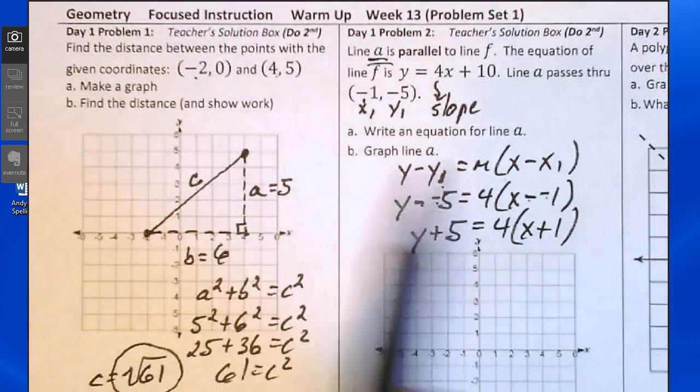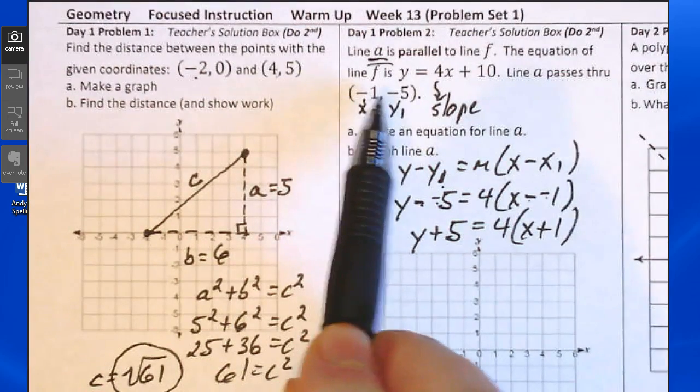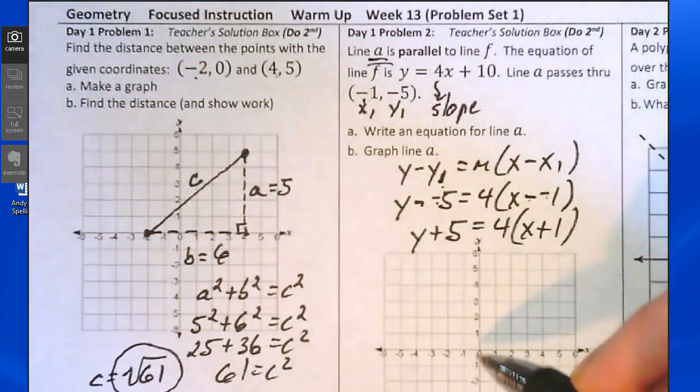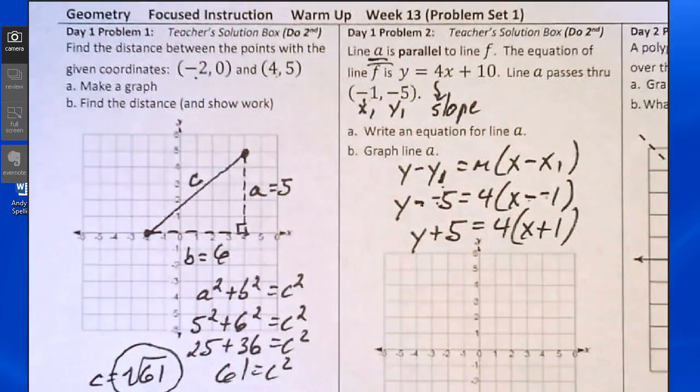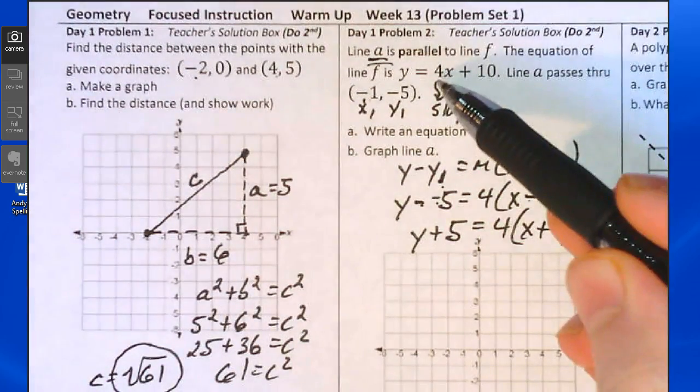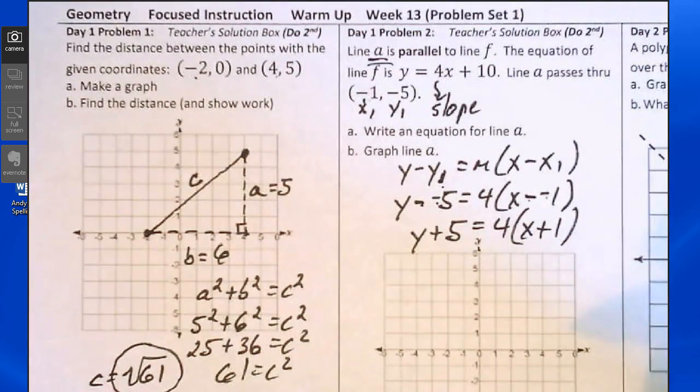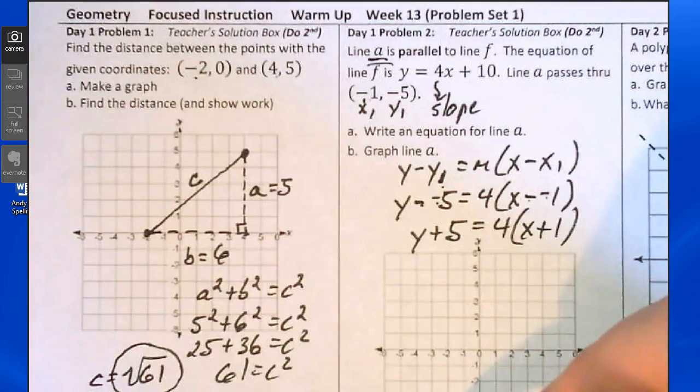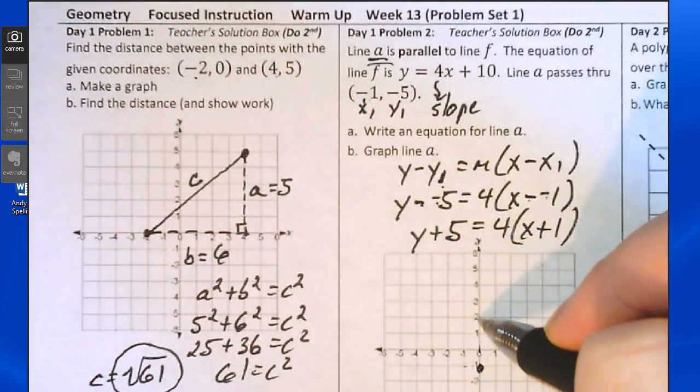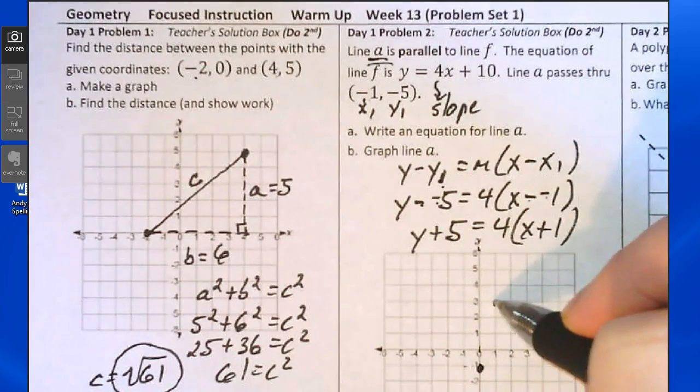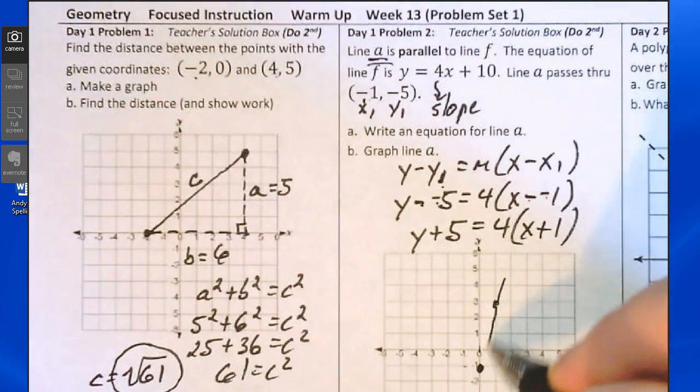We're asked to graph line A. We know it goes through the point negative 1 comma negative 5. So left 1, down 5, here's that point. And we know the slope of line A is 4. Or in terms of rise over run, 4 over 1. So up 4 units, right 1 unit. Up 4 units, right 1 unit. Here is line A.